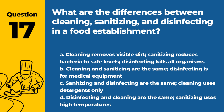Question 17. What are the differences between cleaning, sanitizing, and disinfecting in a food establishment? A. Cleaning removes visible dirt; sanitizing reduces bacteria to safe levels; disinfecting kills all organisms. B. Cleaning and sanitizing are the same; disinfecting is for medical equipment. C. Sanitizing and disinfecting are the same; cleaning uses detergents only. D. Disinfecting and cleaning are the same; sanitizing uses high temperatures. Answer: A. Cleaning removes visible dirt, sanitizing reduces bacteria to safe levels, and disinfecting kills all organisms.